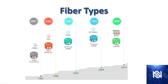Here's a graphic that illustrates the different fiber types when they were released. You can see that OM1 is really old — it was released in 1989. OM3 is still a valid fiber type, which was introduced in 2002, so it's had a pretty extensive life.